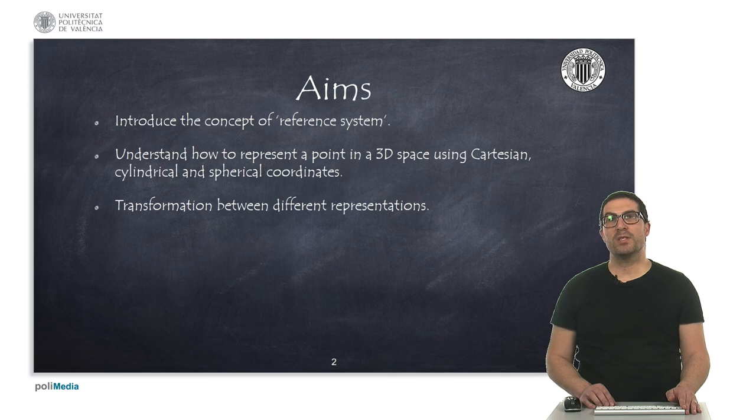Then, we will see different ways of representing the position of a point in a 3D space, using Cartesian, cylindrical, and spherical coordinates. Finally, we will see how to make transformations between spaces.